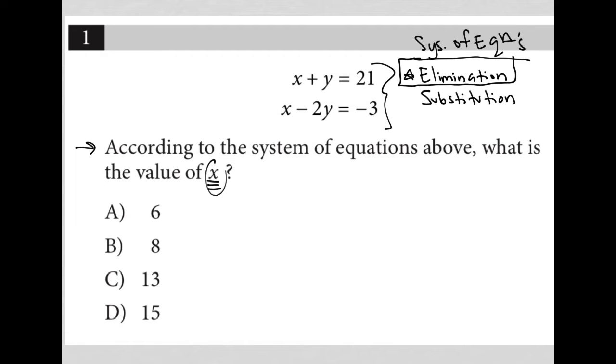In this case, because we want x, I'm going to write out my equations again and eliminate the y values. This means I'm first going to multiply the top equation by 2 so that I end up with a positive 2y in the top equation. So that when I combine the two equations,